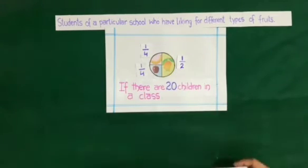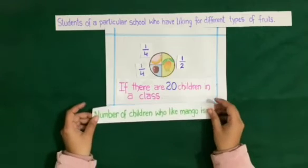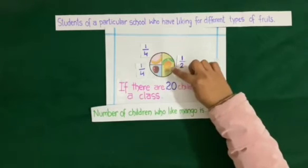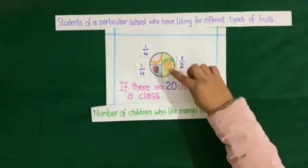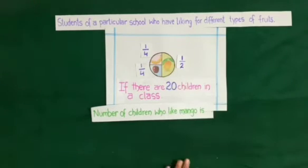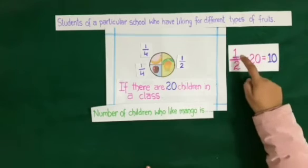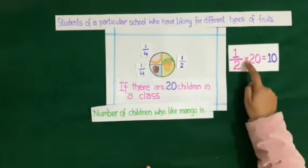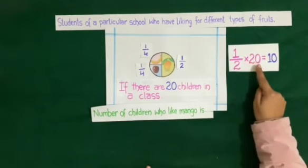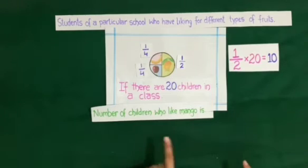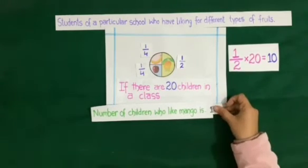First question: the number of children who like mango. Half of the children like mango. Representing it mathematically: 1/2 multiplied by 20 equals 10. So the number of children who like mango is 10.